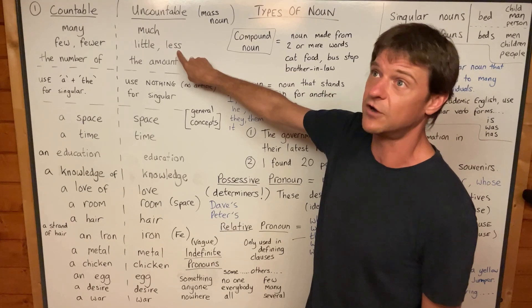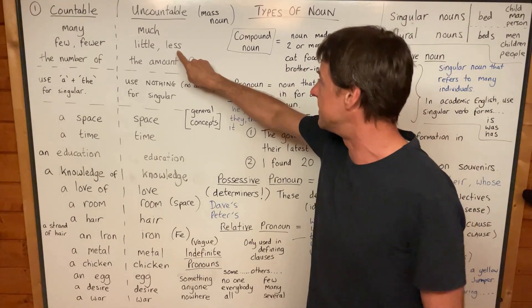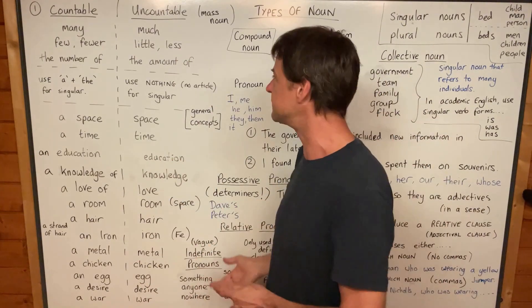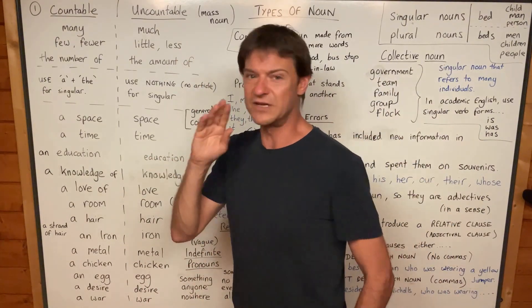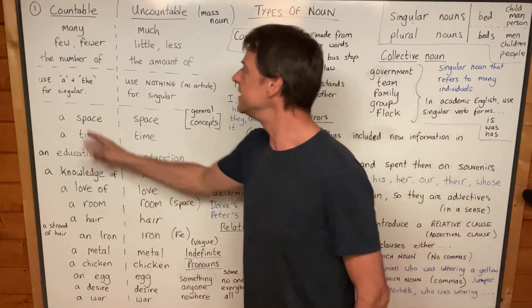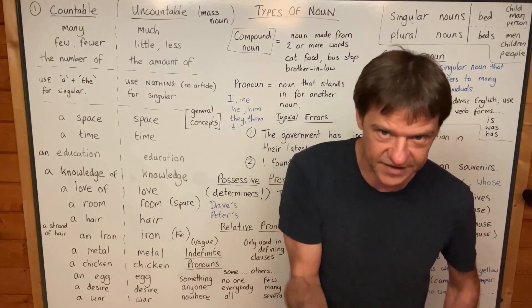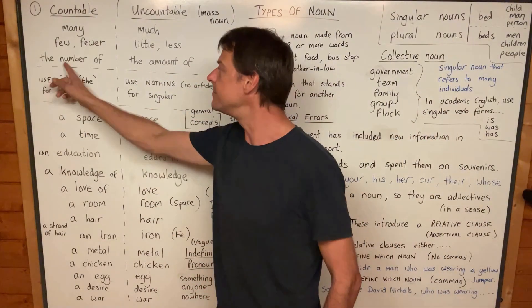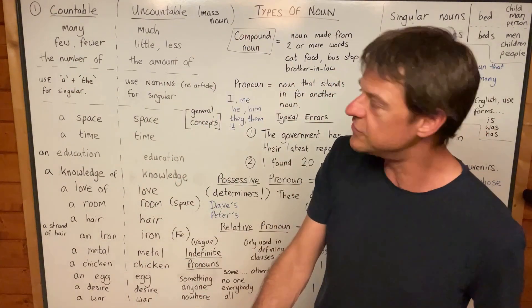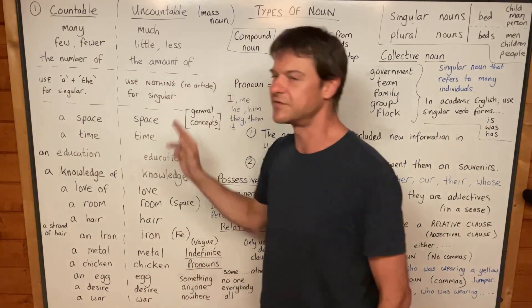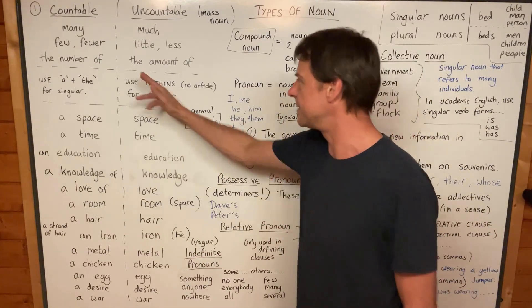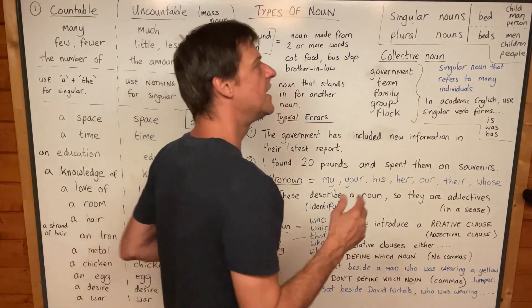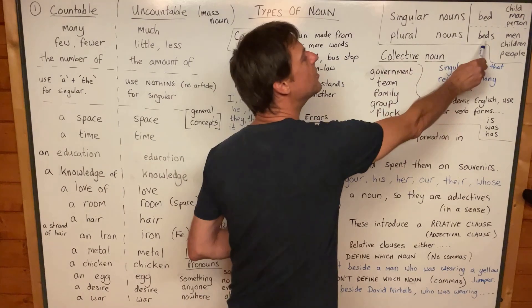Natives say 'less mistakes' almost every time — in fact, I think they say it every time, and so did I growing up, because everybody said it and I assumed it was correct, but it's not. Another one that everybody gets wrong is 'the number of' plus a countable noun versus 'the amount of' plus an uncountable noun. You say 'the number of cars on the road has decreased,' not 'the amount of cars on the road has decreased,' because 'cars' is countable — and you can see it's countable because 'cars' is plural.